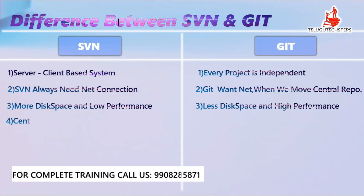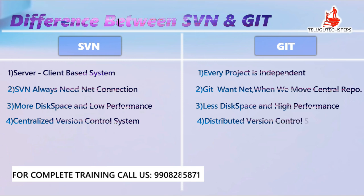Coming to the fourth point: SVN uses centralized version control. What is centralized version control? With Git, each and every developer has a distributed system with a local repository and works on a local system. We push the final version to the central repository — that is why it is called distributed version control. In SVN, all work happens through the centralized version control system.